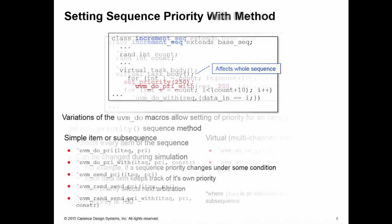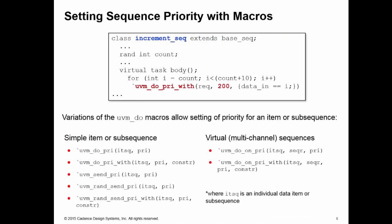The second way is using the do macros. The do macros come in a variant that allows you to set the priority for an individual item or subsequence generated by that do macro. Whether using simple do macros from a simple sequence or do_on macros for virtual or multi-channel sequences, all come in a form with an argument to specify priority. Be careful—the do_pri_with macros take the second argument as priority and have the constraint for randomization as the final argument. There's a reordering of arguments between do_with and do_pri_with.